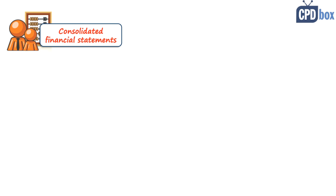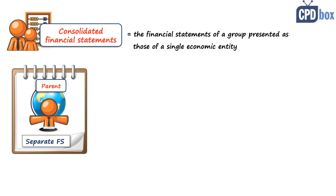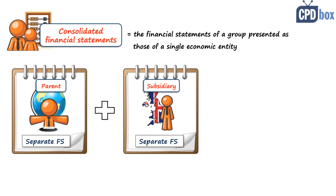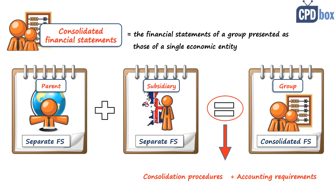Apart from control, IFRS 10 speaks about consolidated financial statements, which are defined as the financial statements of a group presented as those of a single economic entity. Basically, we take the separate financial statements of a parent and the separate financial statements of a subsidiary, and based on these we create the group consolidated financial statements. This requires certain consolidation procedures — not a simple addition of two numbers. IFRS 10 also sets accounting requirements such as uniform accounting policies, different reporting dates, inclusion and exclusion of subsidiaries, presentation of non-controlling interest, changes in ownership interest, and other matters.